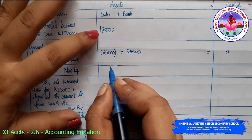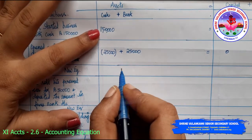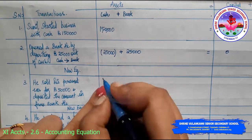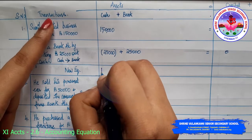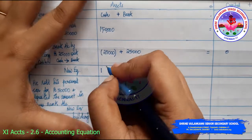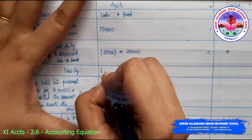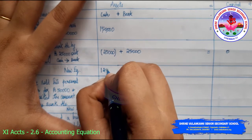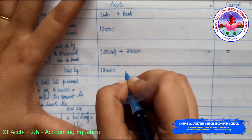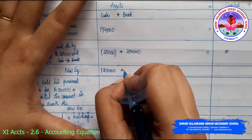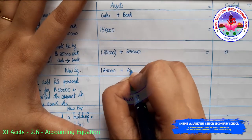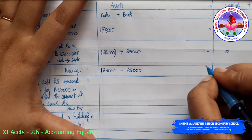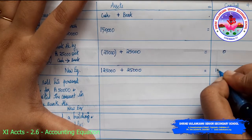New equation: 1 lakh 50,000 minus 25,000 gives real cash in the business as 1 lakh 25,000, plus bank 25,000, equals 1 lakh 50,000 as capital. Tallied.